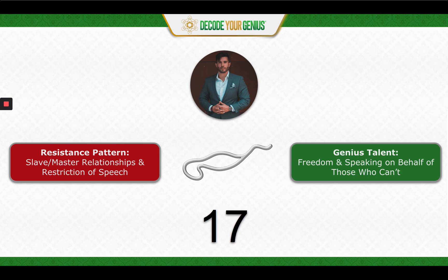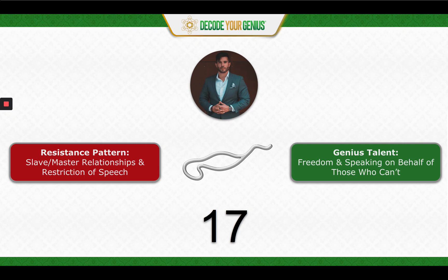Depending on the slave-master relationship, this can get very extreme — it can be a marriage where it's abusive. It can be many different things where it's very extreme. So the process of speaking up for yourself and breaking free is going to be different for each relationship. And especially with the slave-master dynamic, there are times where a person just needs to get out of it because the other person is so in the darkness that speaking up won't change their ways of action.